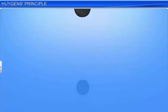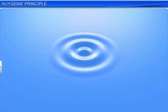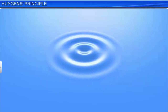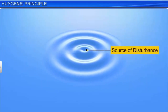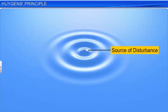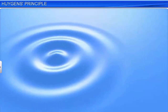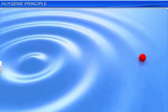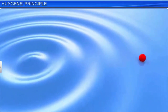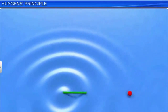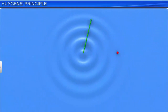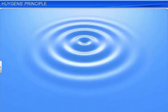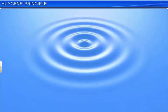A small pebble dropped in a pool of still water creates ripples on the surface. These ripples form concentric circular rings around the source of disturbance and spread outward. When these ripples reach a point on the surface of water, the point starts oscillating up and down. Different points at the same distance from the source oscillate in phase, meaning all these points reach the crest or trough at the same time.